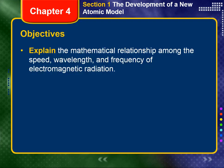At this point, you should be able to explain the mathematical relationship among speed, wavelength, and frequency of electromagnetic radiation.